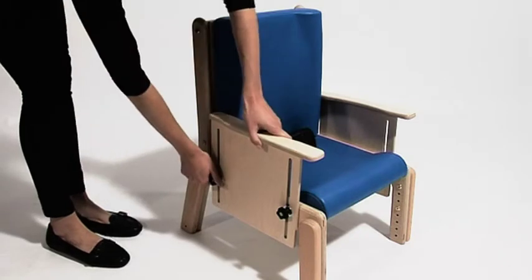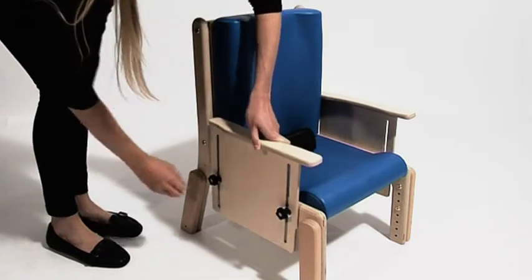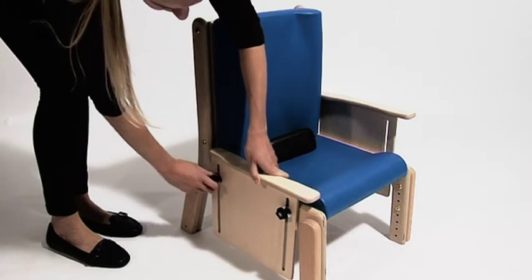To adjust the height of the armrest, loosen the hand wheels, slide the armrest to the desired position and then re-tighten the hand wheels.